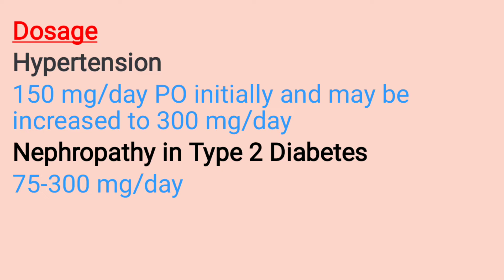And in nephropathy in type 2 diabetes, the dosage is usually between 75 to 300 mg per day.